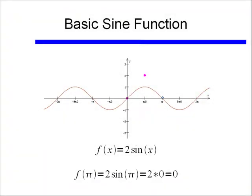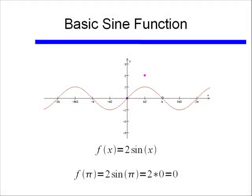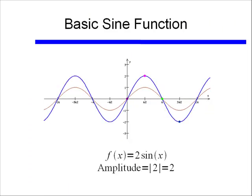The next point is π. Sine of π is 0, so f(π) is also equal to 0. At 3π/2, plugging into 2 times sine x gives 2 times sine of 3π/2, and sine of 3π/2 equals negative 1, so 2 times that is negative 2. The point at 2π also ends up being 0. Connecting those dots, the graph of f(x) = 2 sine x is expanded or stretched by 2. The amplitude is the absolute value of 2, which is simply 2.